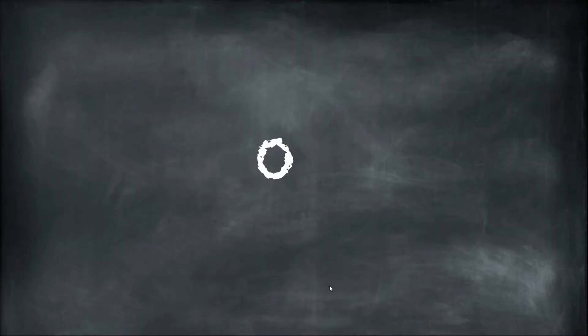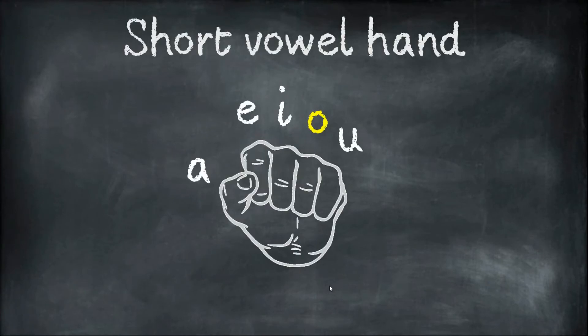Today we're looking at the letter O and the different ways that we can say it when we see it. The first thing we can do is we can say the short vowel sound. Do you remember we can make a fist? A E I O U. So we're saying the letter O, we say the O sound for the short vowel sound.